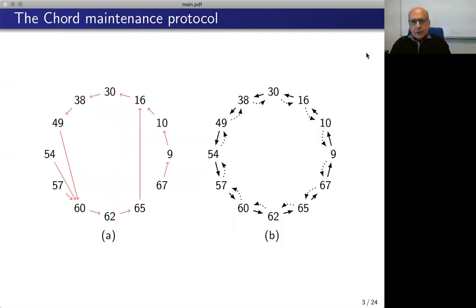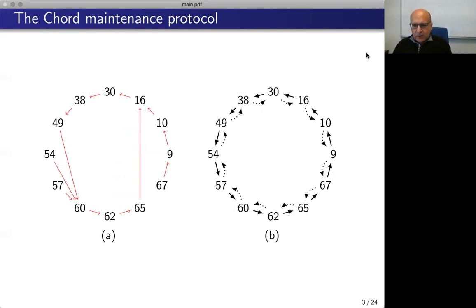In order to give an intuition of the Chord maintenance protocol, suppose we have on the network on the left a set of nodes, and each node has a successor — a pointer to another node. The role of the Chord maintenance protocol is to move the connections on the left to the connections on the right, such that they define a network connected according to a ring topology. We should also mention that the protocol handles when a node joins or fails.